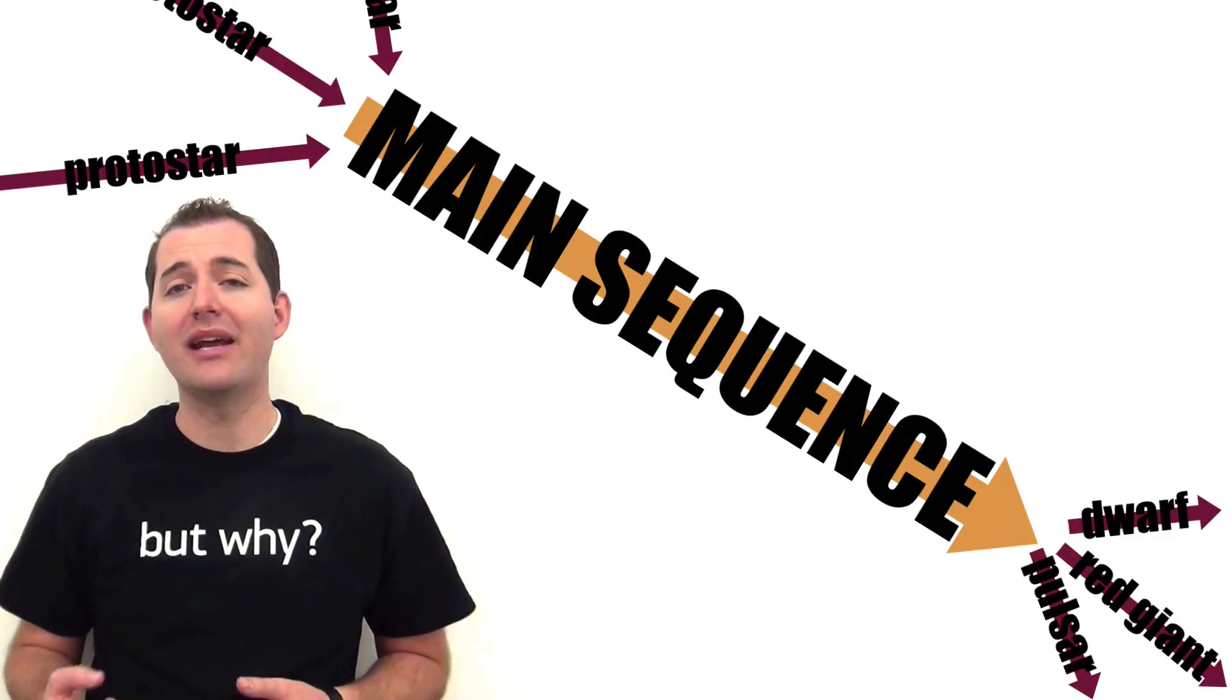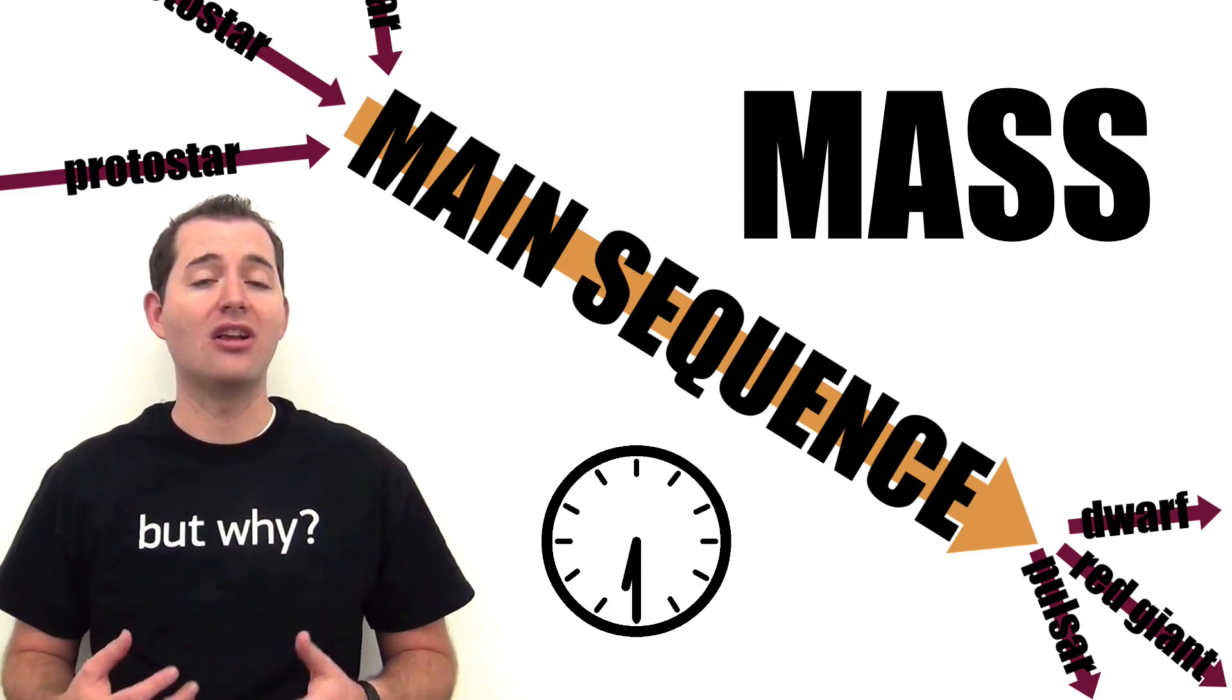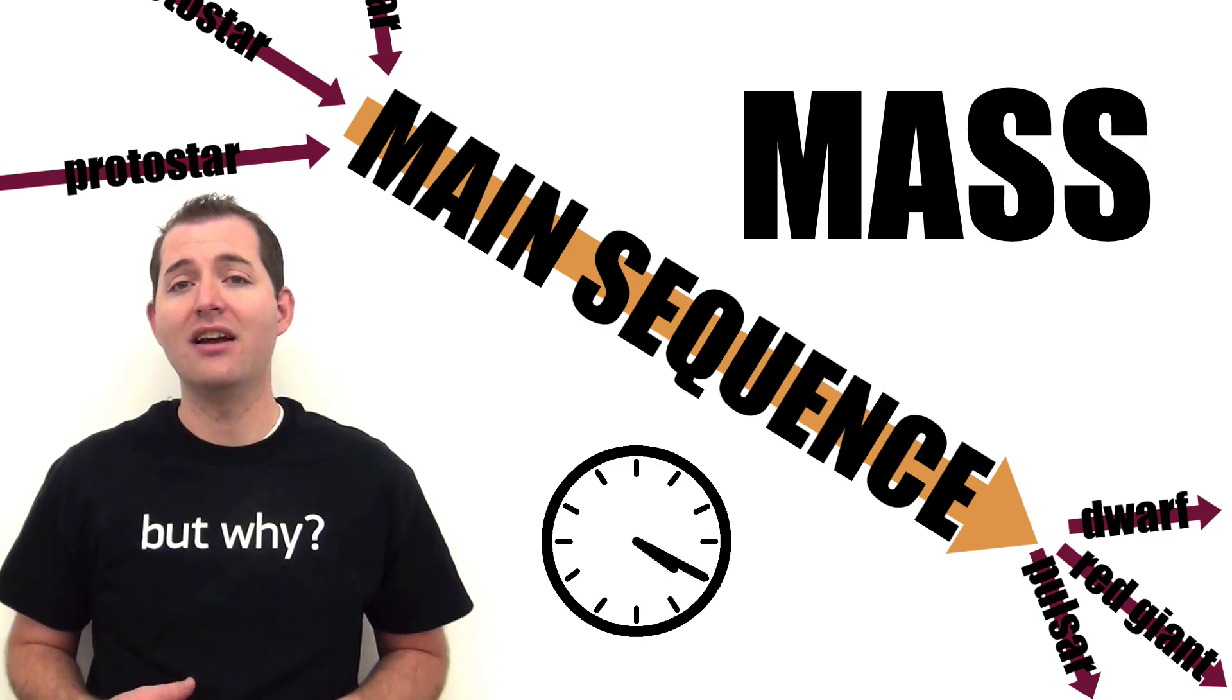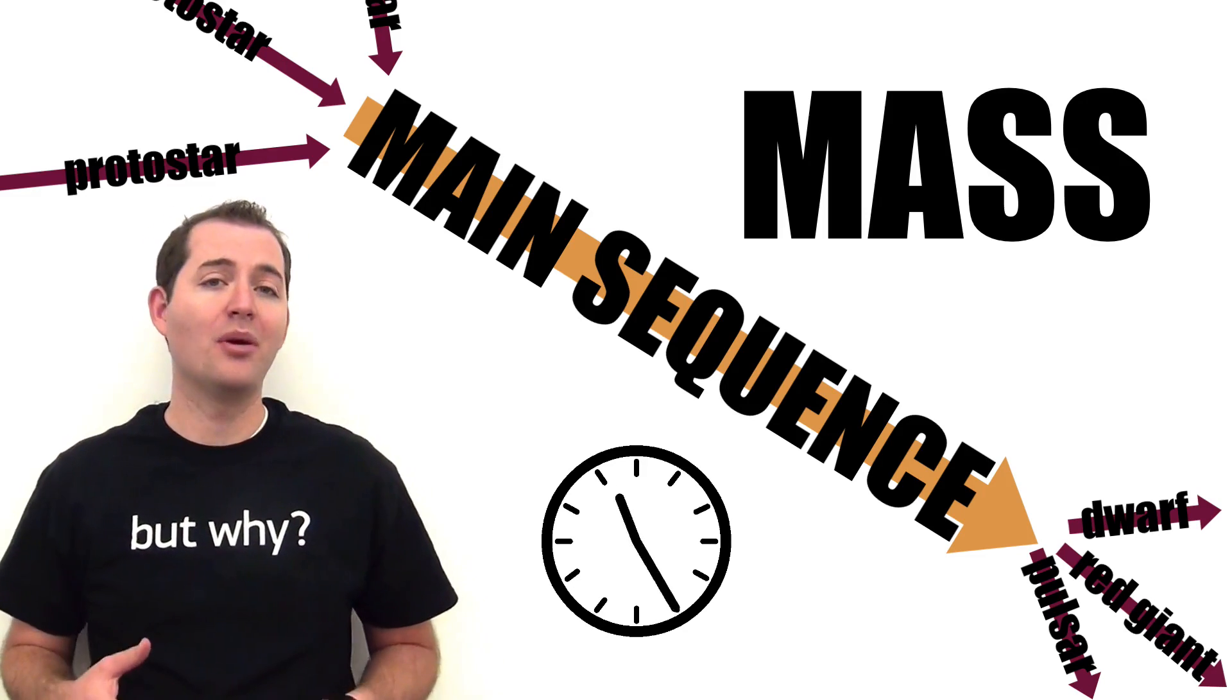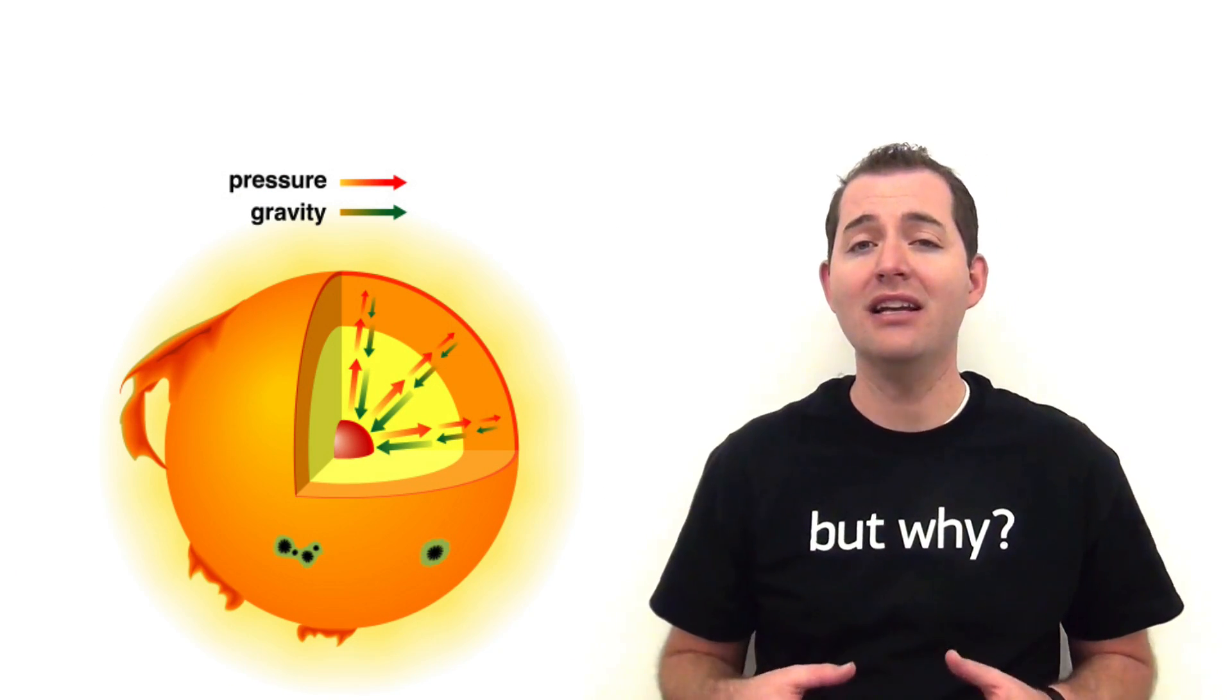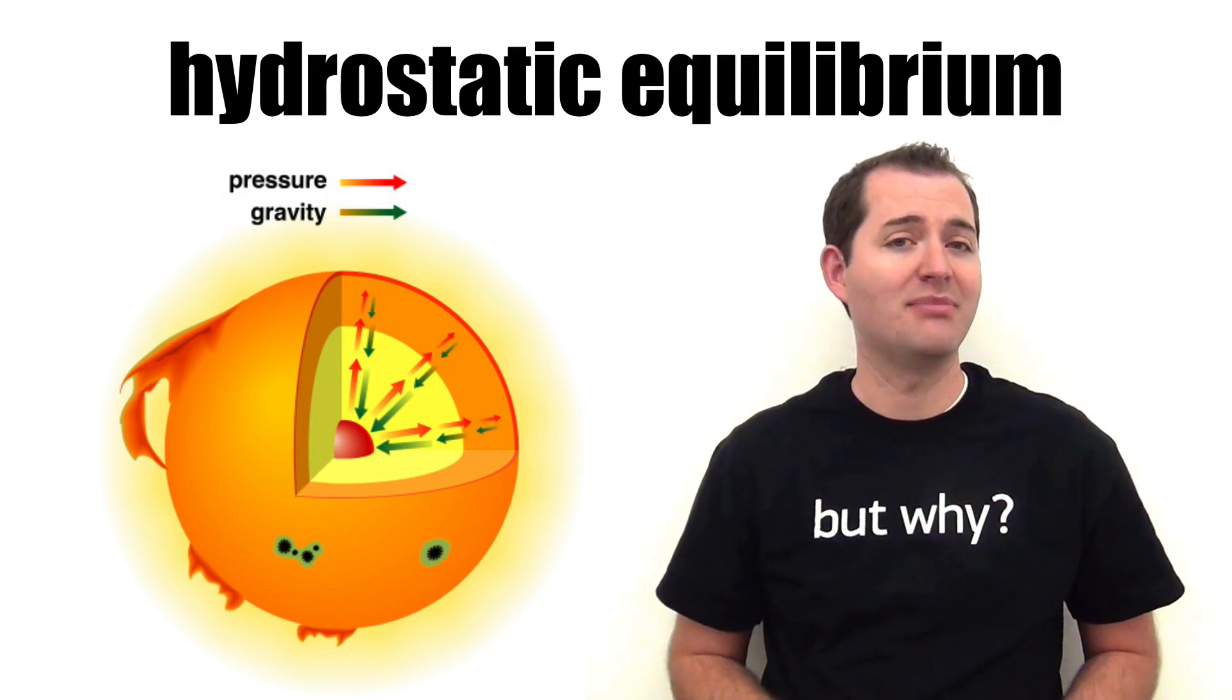Generally all stars pass through this main sequence phase, but how much time they spend on it is largely dependent upon how much mass they have. Large mass stars will generally burn through their fuel more quickly and move more quickly through the main sequence, whereas smaller mass stars burn through their fuel more slowly and will spend more time in this main sequence. This balance between the thermal pressure pushing outward and the gravitational collapse pulling in is known as hydrostatic equilibrium. Main sequence stars are identified in this way because of this balance.